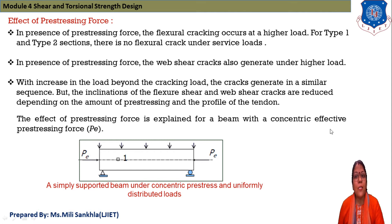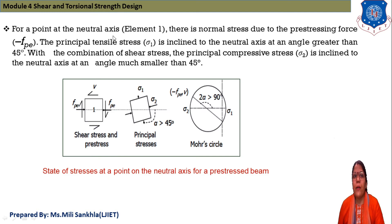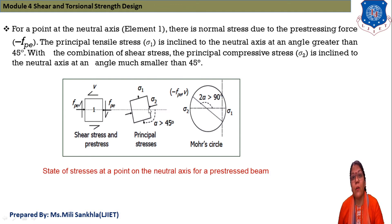Flexural crack and web shear crack depend on the amount of pre-stressing force and alignment of tendons, which depends on eccentricity. The effect of pre-stressing force is explained for a beam with concentric effective pre-stressing force Pe, passing through the neutral axis (center of beam), acting as a concentric load along with UDL. For element one at the neutral axis, the normal stress due to pre-stressing force is negative (minus fpe), and principal tensile stress sigma-1 is inclined to the neutral axis at an angle greater than 45 degrees.